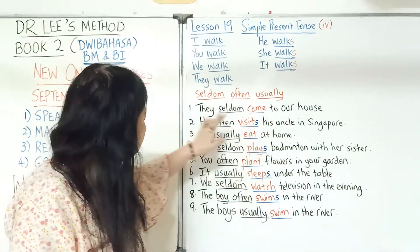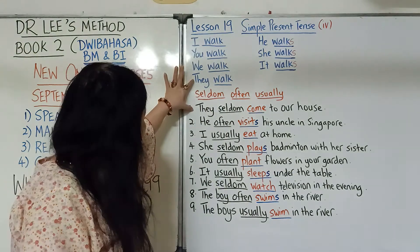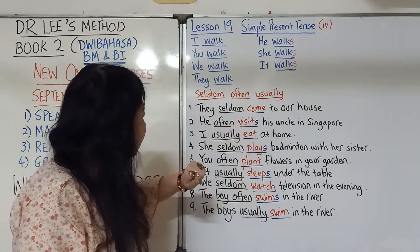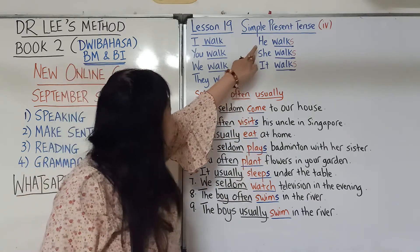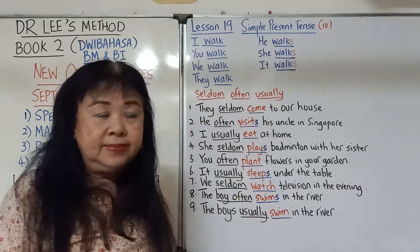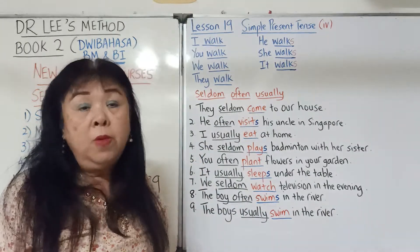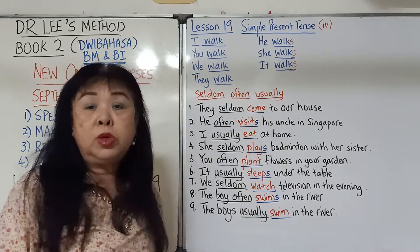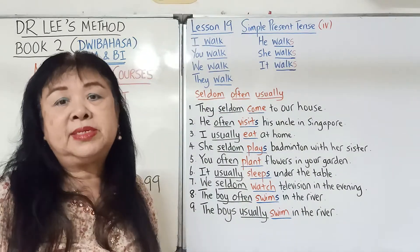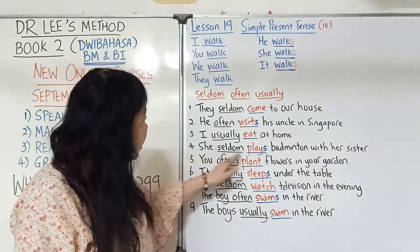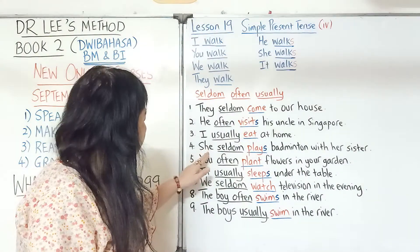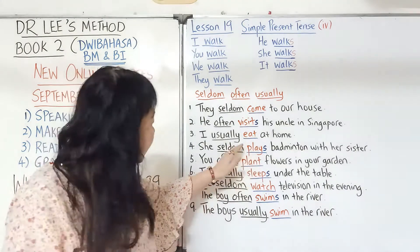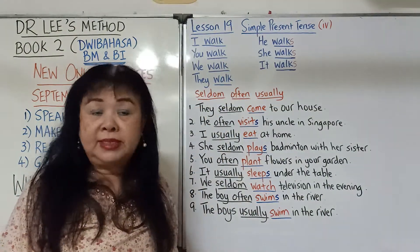Example: 'They seldom come to our house.' Look at 'they' — you cannot put an S, so it's 'come.' And then, seldom. 'He often visits his uncle in Singapore.' He — the verb you must put an S, so it's 'visits.' 'I usually eat at home.' I — cannot put an S. When you use the word 'usually,' you mean Simple Present Tense. 'She seldom plays badminton with her sister.' She, he, it — the verb you must put an S, so 'plays.' This word 'seldom' comes under Simple Present Tense.